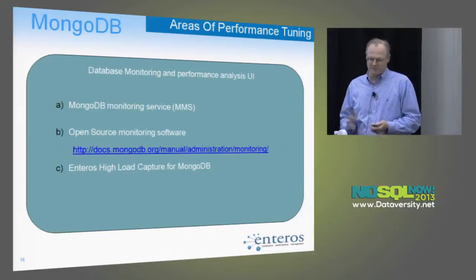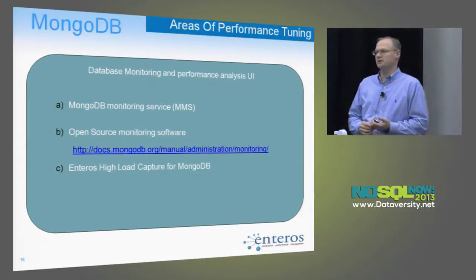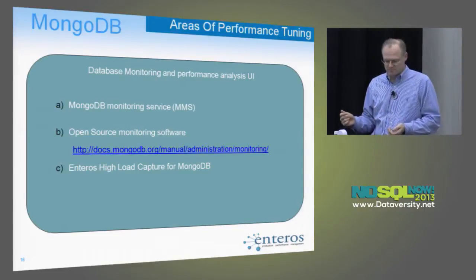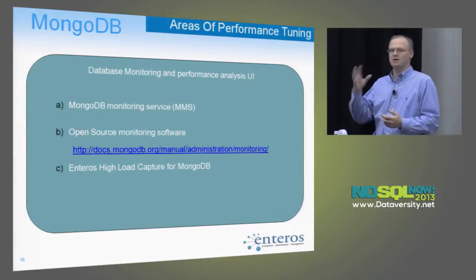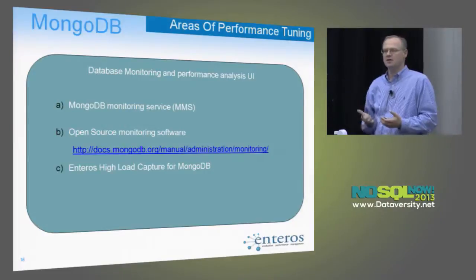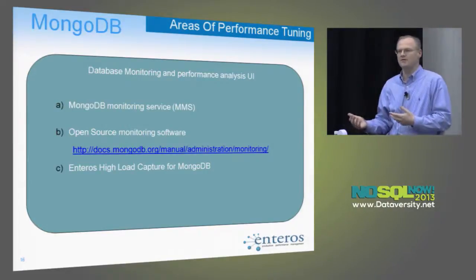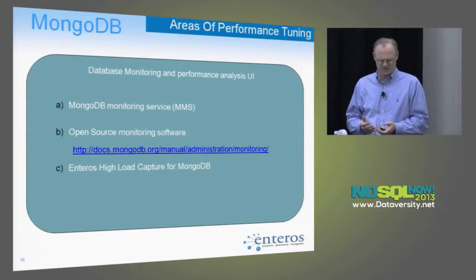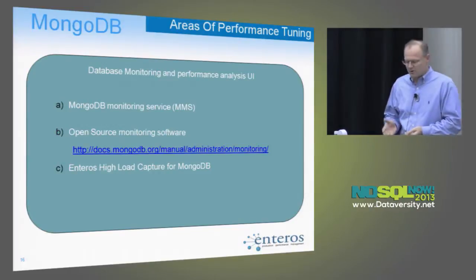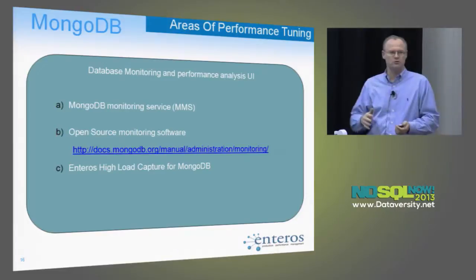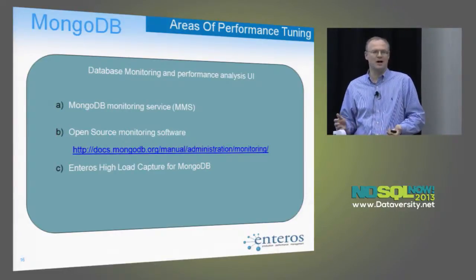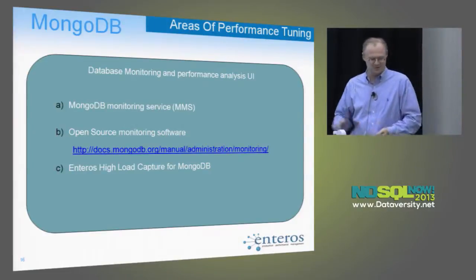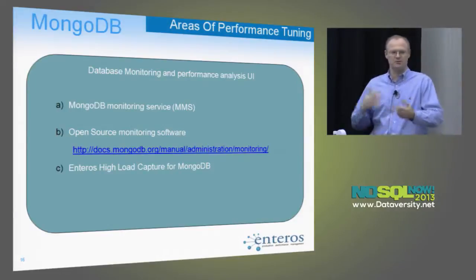For UI monitoring, there is the MongoDB Monitoring Service (MMS) from 10gen — you can plug in your database and set up alerts. My major complaint is it's very simple and covers only one database at a time. For enterprise setups with clusters, shards, and shared storage area networks, you need cross-system analysis. There is also a full page on the MongoDB website with open-source monitoring software options. I personally like Cacti — there is a MongoDB plugin for it available. We also have a product that provides cross-system analysis, but that's beyond the scope of this presentation.